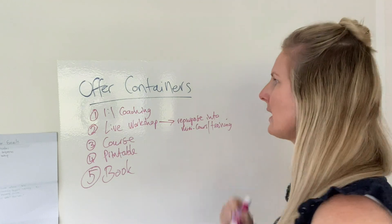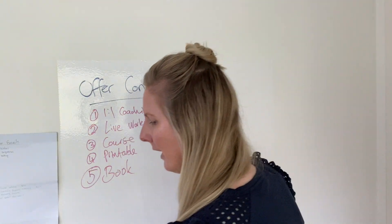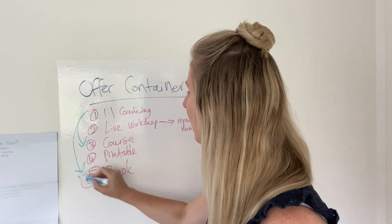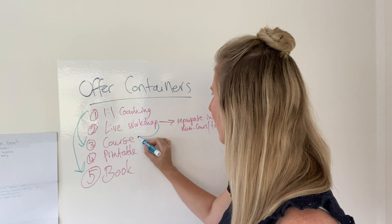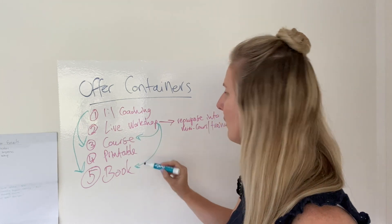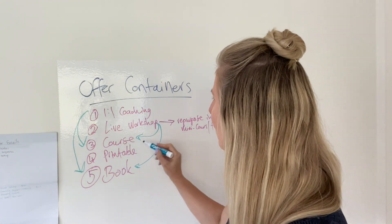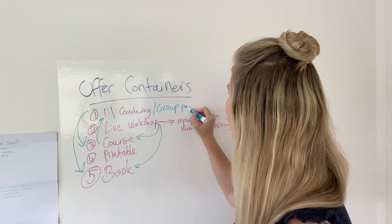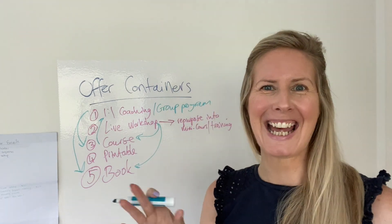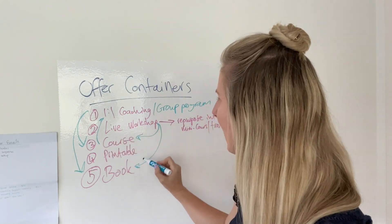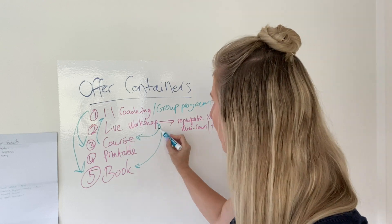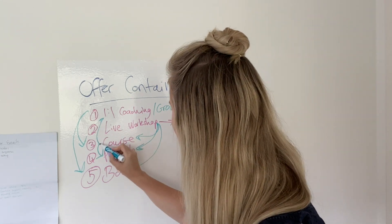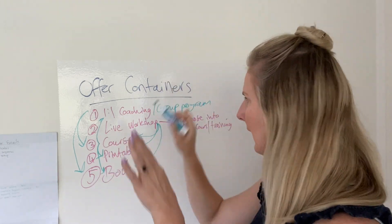It's important to understand that one-on-one coaching could also turn into a course, a book, or a live workshop. A live workshop could pretty easily go into a course, and you could also turn that into the start of a book. You could take a course and go into one-on-one coaching, or even a group program — which is a hybrid of a course and coaching. You could also take elements of a workshop or a course and turn it into a printable. And a course can go straight into a book as well.